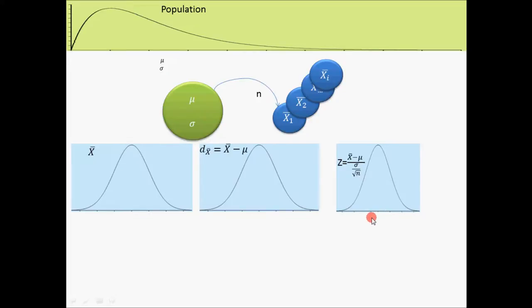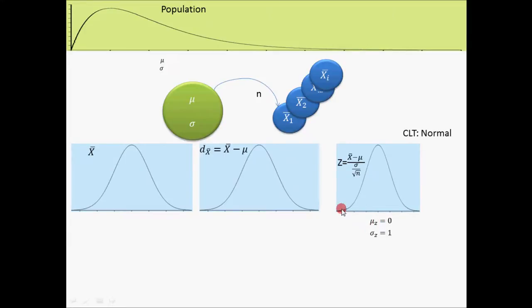The Central Limit Theorem is a theorem that says if we look at the distribution of a variable such as z, we will discover that it will have a normal distribution with a mean of zero and a standard deviation of one.